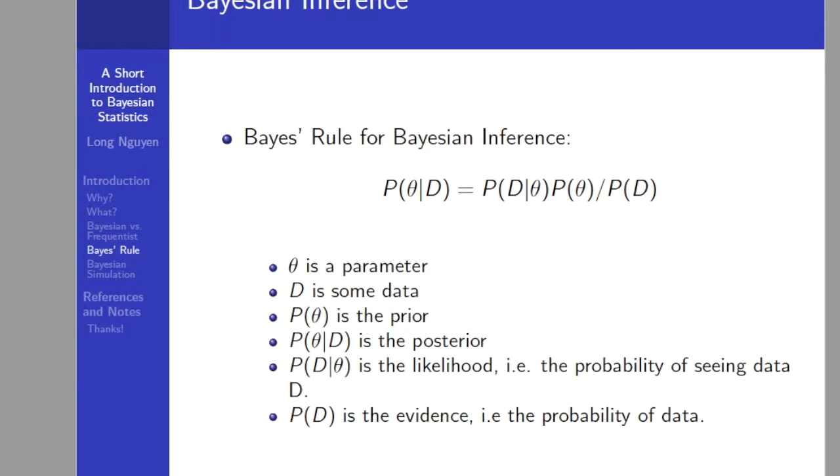P of D given Theta is the likelihood. This is the probability of seeing the data D as generated by a model with parameter Theta. For example, if we knew the coin was fair, this tells us the probability of seeing a number of heads in a particular number of flips.